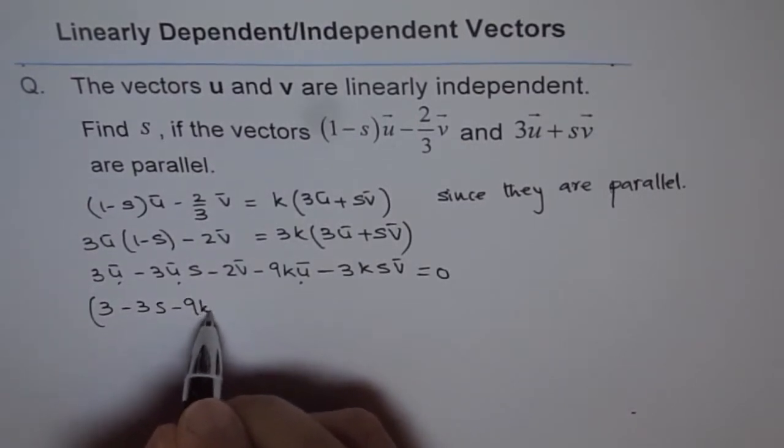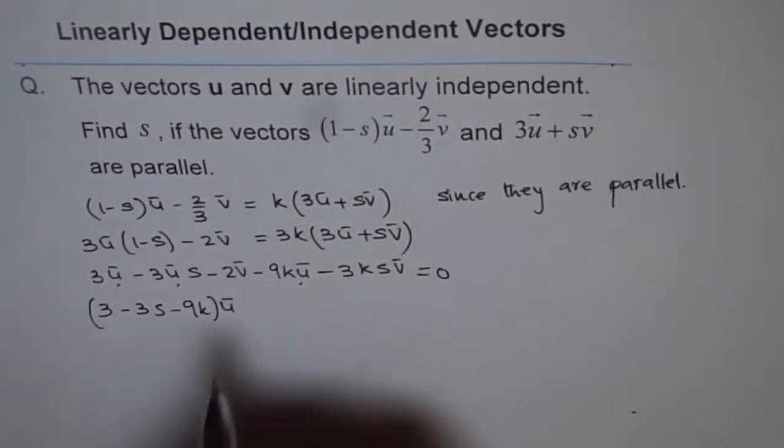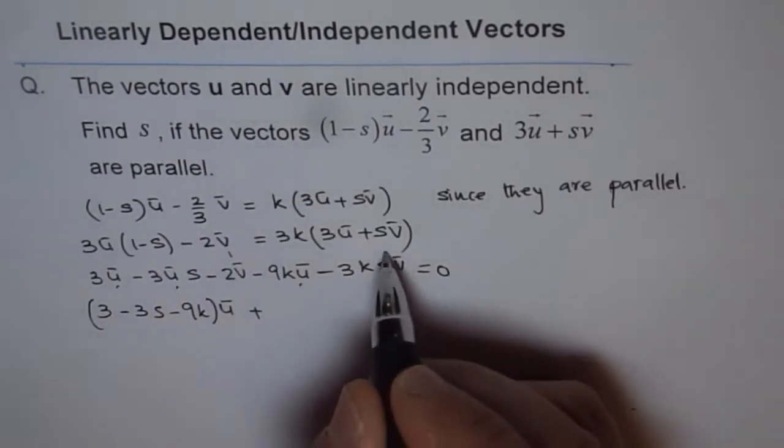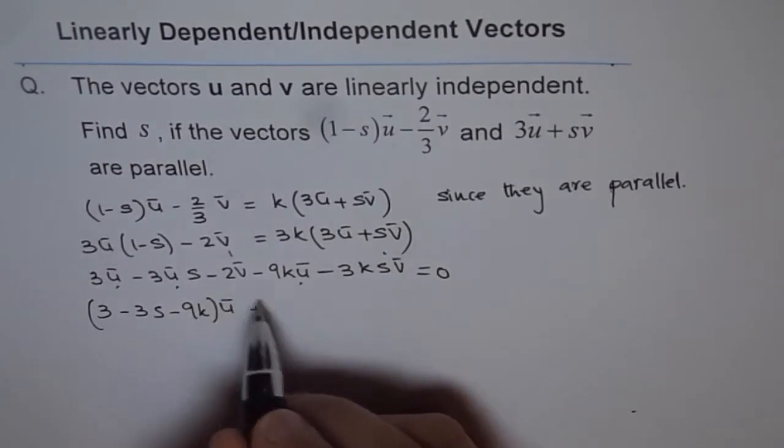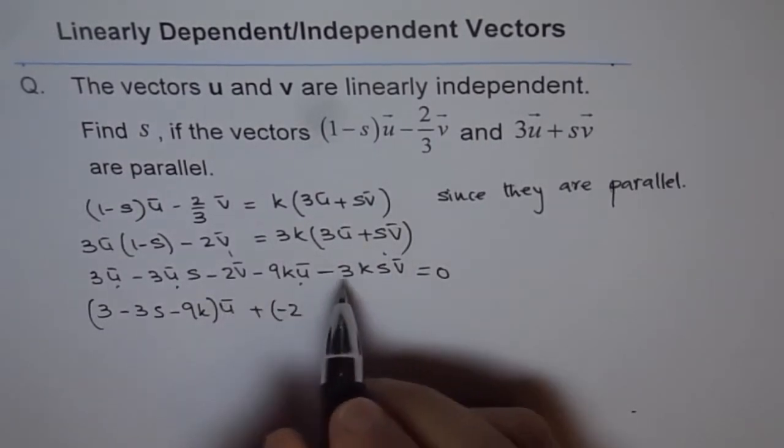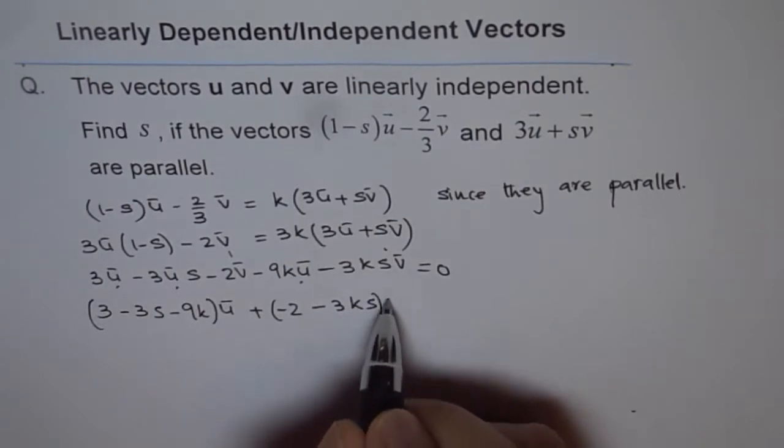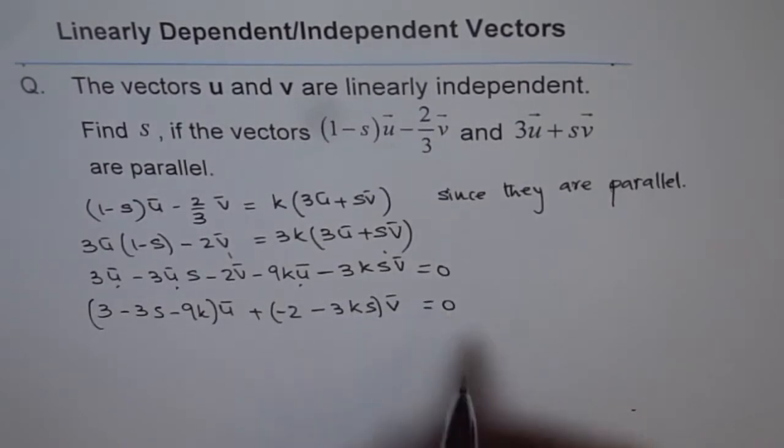And for v, we have these two factors. So, the coefficient for v is minus 2. And here we have minus 3ks equals to 0.